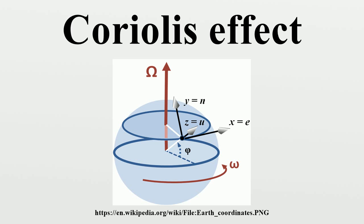History: Italian scientist Giovanni Battista Riccioli and his assistant Francesco Maria Grimaldi described the effect in connection with artillery in the 1651 Almagestum Novum, writing that rotation of the Earth should cause a cannonball fired to the north to deflect to the east.